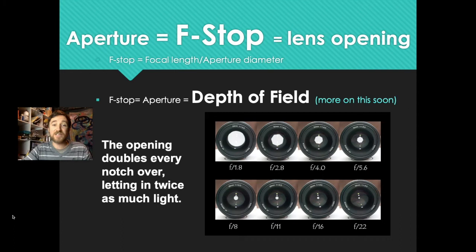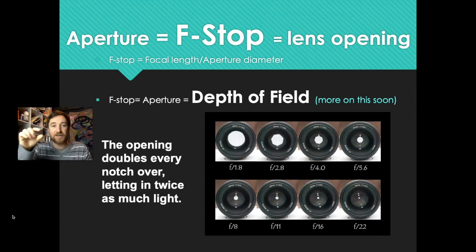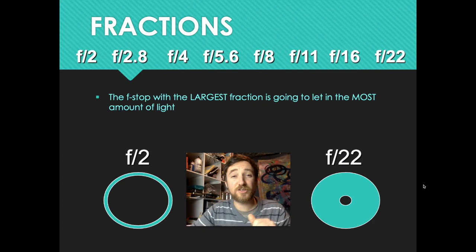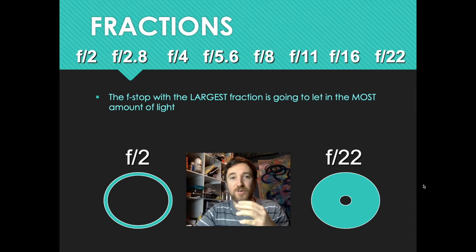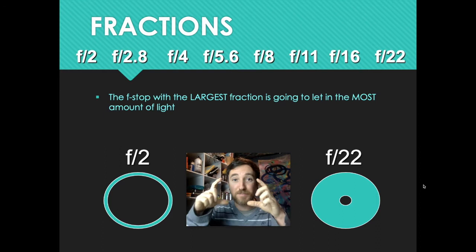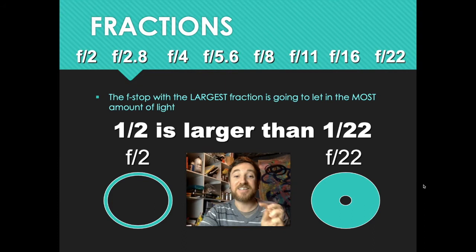F-stop is also equal to aperture and depth of field, which we'll get into shortly. It's important to note that as each number clicks over — from f/1.8, 2.8, 4, 5.6 — every time you move over one, the amount of light coming in is actually doubling. Also, aperture is based on fractions. When you look at f/2 or f/22, think of that as 1/2 or 1/22. Notice that f/2 is a bigger opening than f/22 because a half is larger than a twenty-second. Remember, it's a fraction.